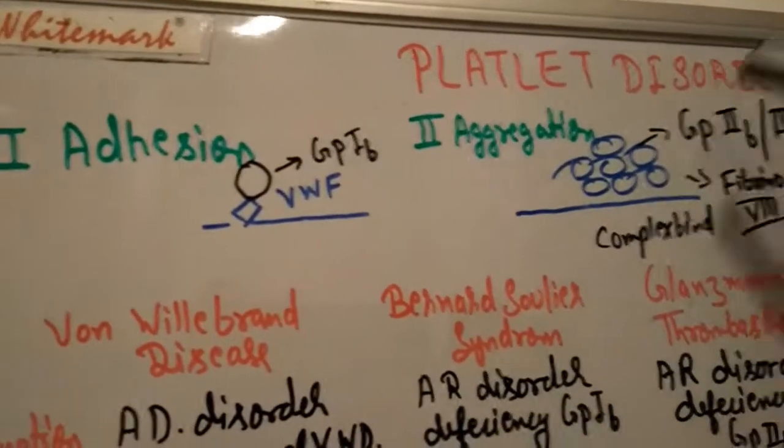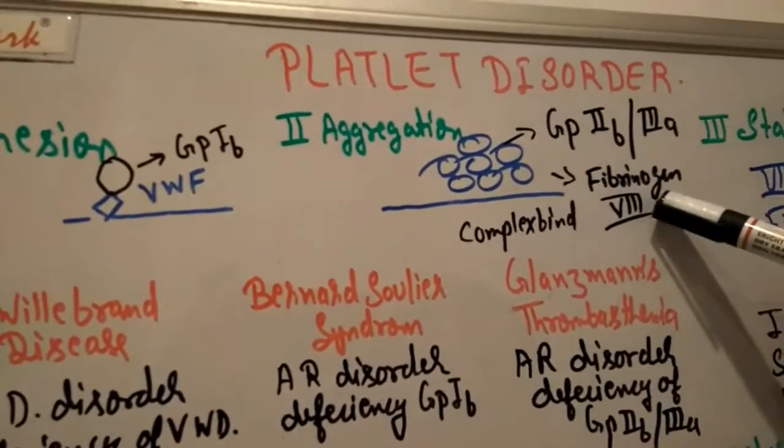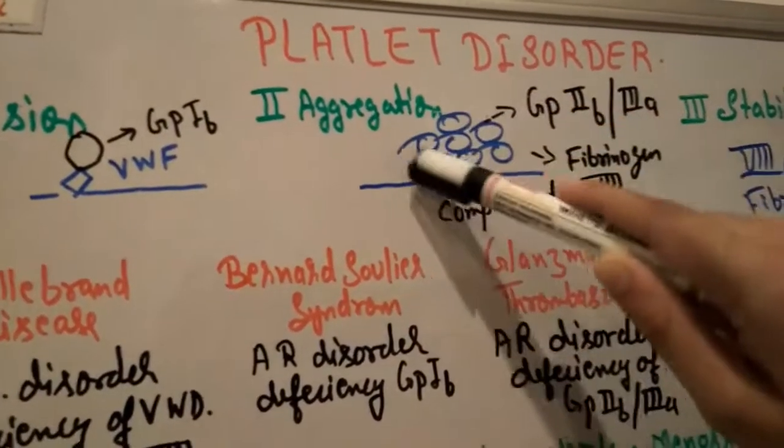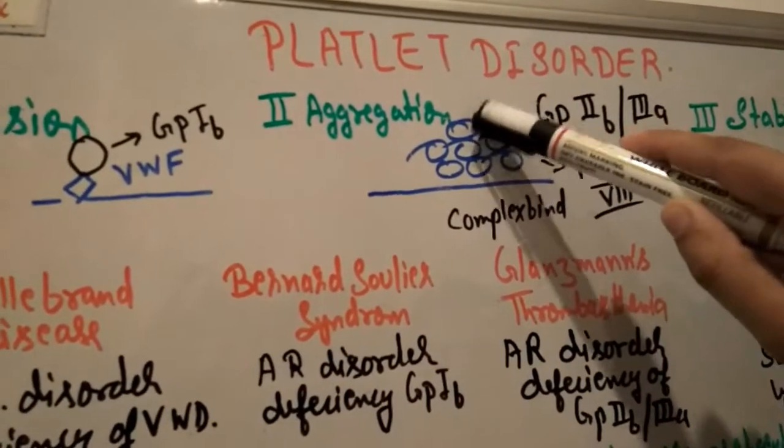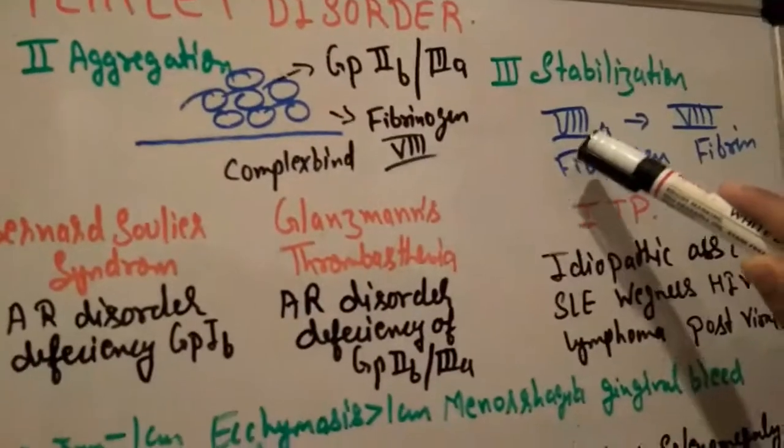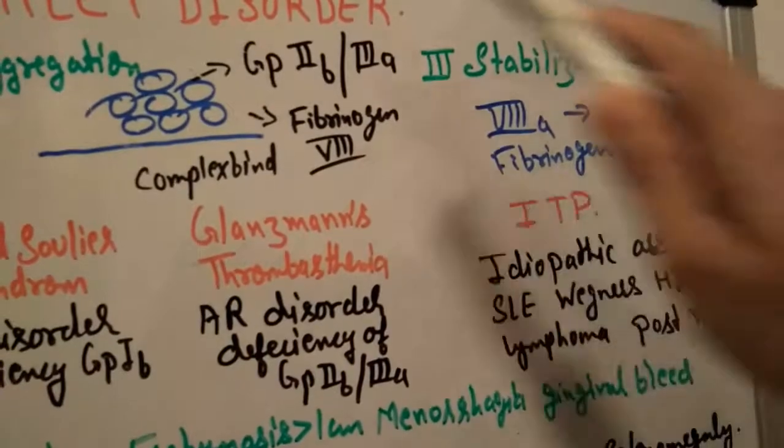Next, glycoprotein 2B and 3A with fibrinogen factor 8 aggregate like a complex binding together here. This is normal physiology, and then stabilization occurs. Fibrinogen 8A converts into fibrin 8. This is the process.